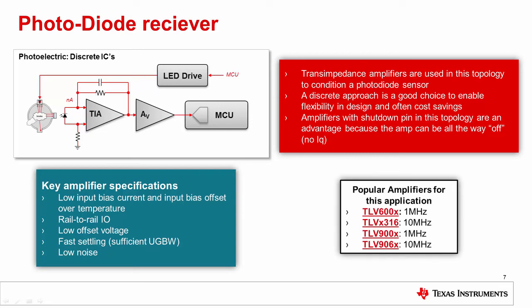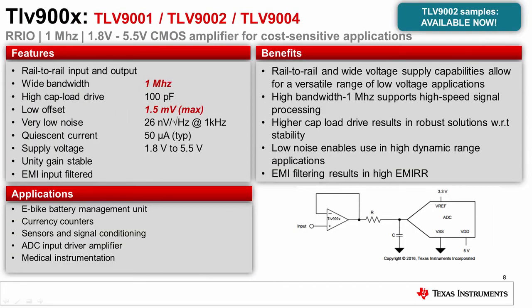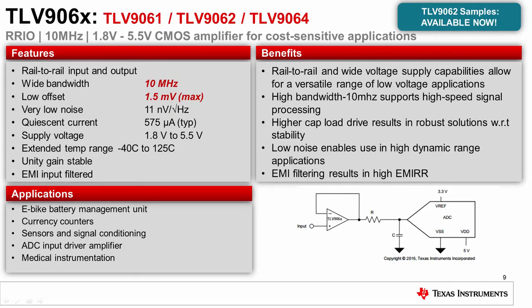Shown here are some of TI's most popular amplifiers for this application. The TLV906x series and TLV900x series are the newest product offerings on this list. For more information on the trans-impedance amplifier design, check out these blogs. The TLV900 series is a low-cost 1 MHz op-amp featuring low offset, low noise, and wide supply voltage range. For designs requiring faster turn-on time and settling time, the TLV9062 is a low-cost 10 MHz amplifier, also featuring low offset, low noise, and wide supply voltage range.